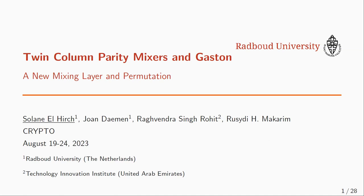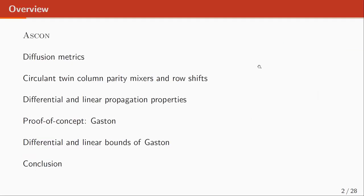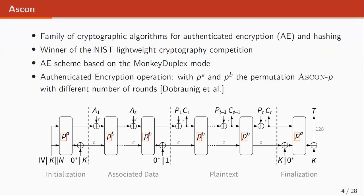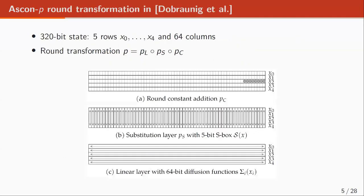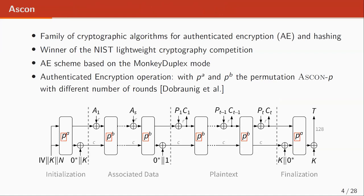Thank you for the introduction. This is an overview of the presentation. Let's first start with ASCON. ASCON is a familiar cryptographic algorithm for authenticated encryption, and it is a winner of the NIST-like competition. Its authenticated scheme is based on the Mohiki duplex mode, and here we have the authenticated encryption operation that uses the permutation, here highlighted in red, instantiated with a different number of rounds depending on where it's used. We are going to focus on this permutation.